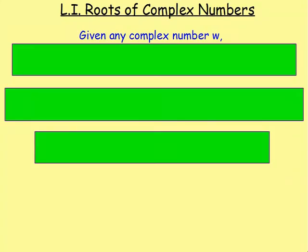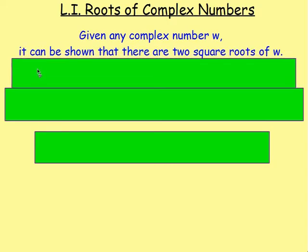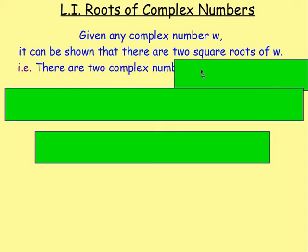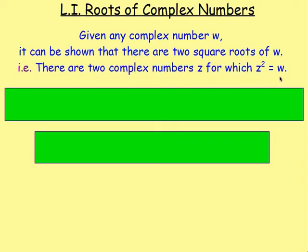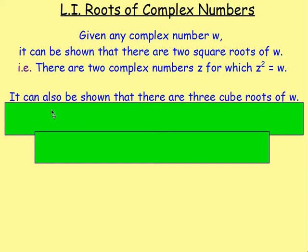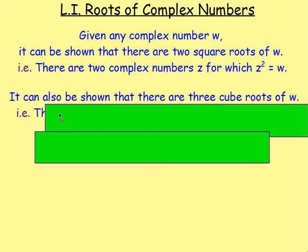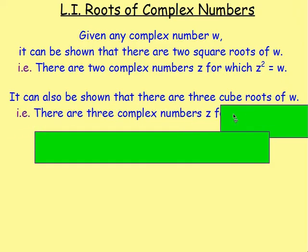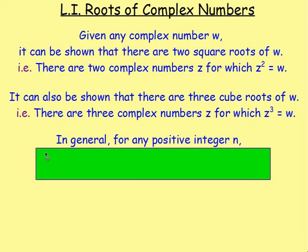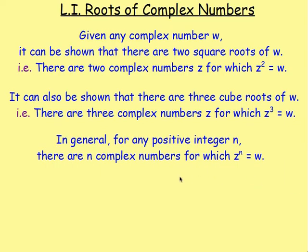Given any complex number W, it can be shown that there are two square roots of W — two different complex numbers that when you square them, you will end up with W. It can also be shown that there are three cube roots of W — three different complex numbers that when you cube them, you would end up with W. In general, for any positive integer n, there are n complex numbers for which z to the power of n equals W.